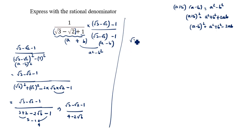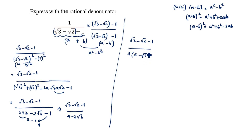Next, factor 2 out of the denominator: root 3 minus root 2 minus 1 divided by 2 times (2 minus root 6). The denominator is still not rational, so we multiply by (2 plus root 6) divided by (2 plus root 6). We put plus here because there is minus in the denominator.